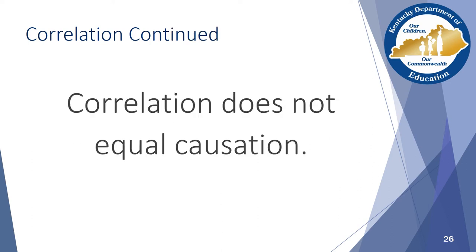While correlation can help us gain information about the relationship between two items, it cannot tell us if one variable directly influences another. For example, if we find that low household income has a positive correlation with low student attendance, we may want to direct resources toward influencing the attendance of students from lower income households, but we cannot assume that having a low household income causes low student attendance. It is important that we interpret the results of correlational tests correctly, and best practice would be to seek out other data points before committing time and resources toward a potential solution.